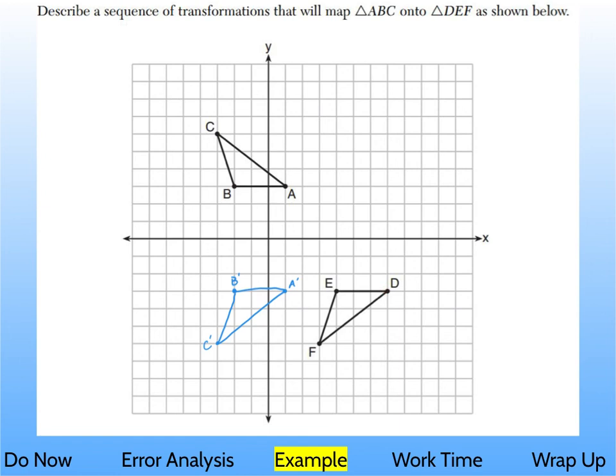So when you translate it six to the right, then you end up right on DEF. So just to recap and write it out, we have a reflection over the X axis and then a translation six to the right, and it doesn't go up or down anything. So just six, zero. And there you go.